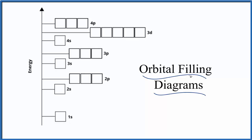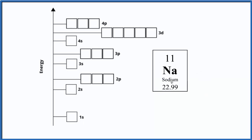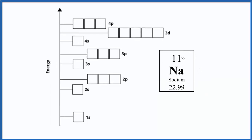Let's do the orbital diagram for sodium, Na. When we look at sodium on the periodic table, its atomic number is 11. The atomic number equals the number of protons, and for neutral elements that's the same as the number of electrons. Since there's no positive or negative sign after it, sodium is neutral, and all elements on the periodic table are written as neutral. So we have 11 electrons.